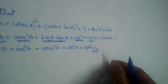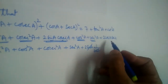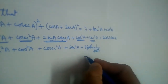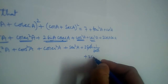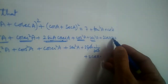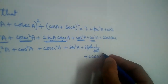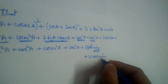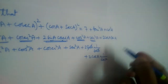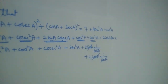Similarly, we have 2·cos a·sec a. Sec a can be written as 1/cos a, because these two are reciprocal functions. So cos and cos cancel, also giving 2.